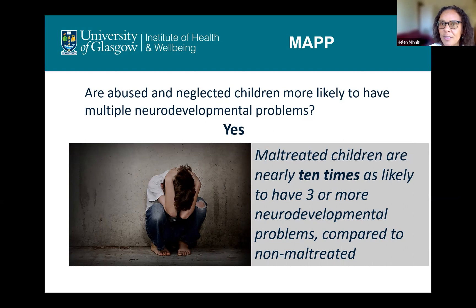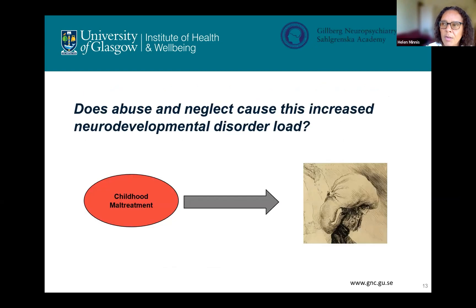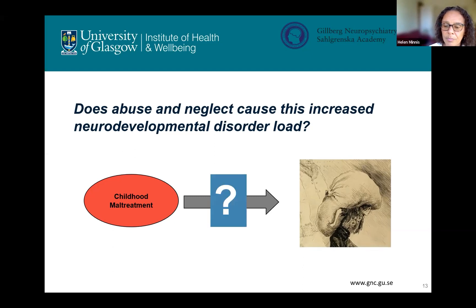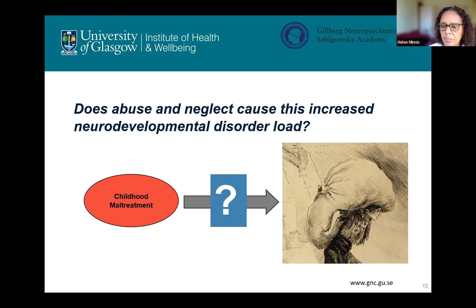As many of you will know, there's a lot of focus now on multi-morbidity, and what's becoming more and more obvious is that neurodevelopmental multi-morbidity starts in childhood. But this was a twin study, so we went on to ask: does abuse and neglect cause this increased neurodevelopmental disorder load? This time it's not the load of ACEs, it's the load of neurodevelopmental conditions.